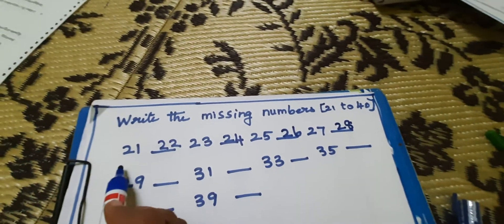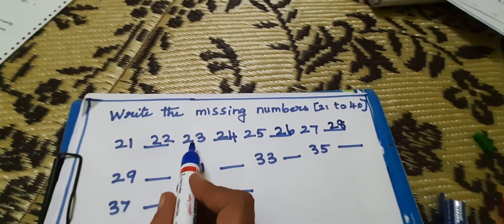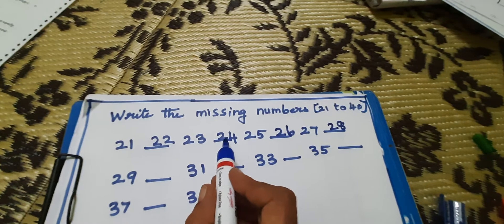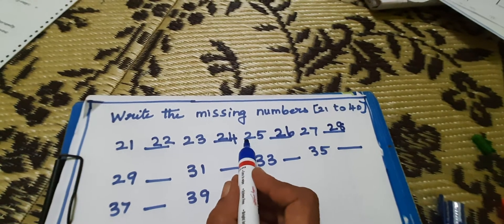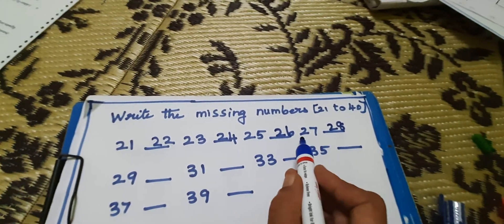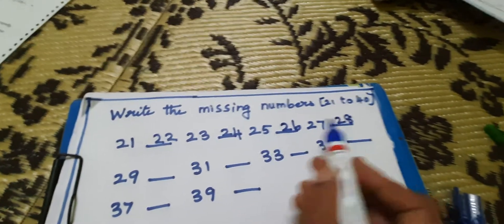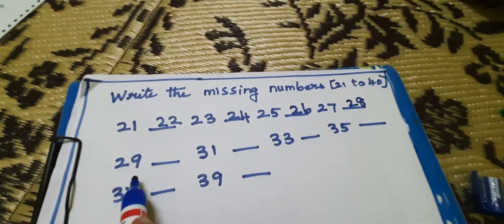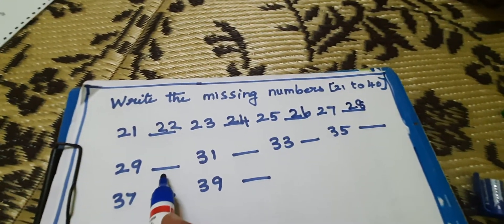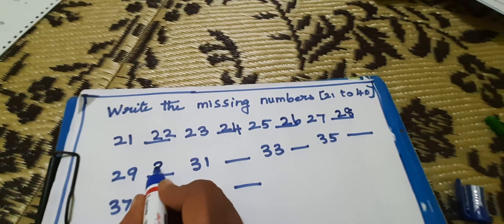21, 22, 23, 24, 25, 26, 27, 28. 29, 29. 30, 30, 30.